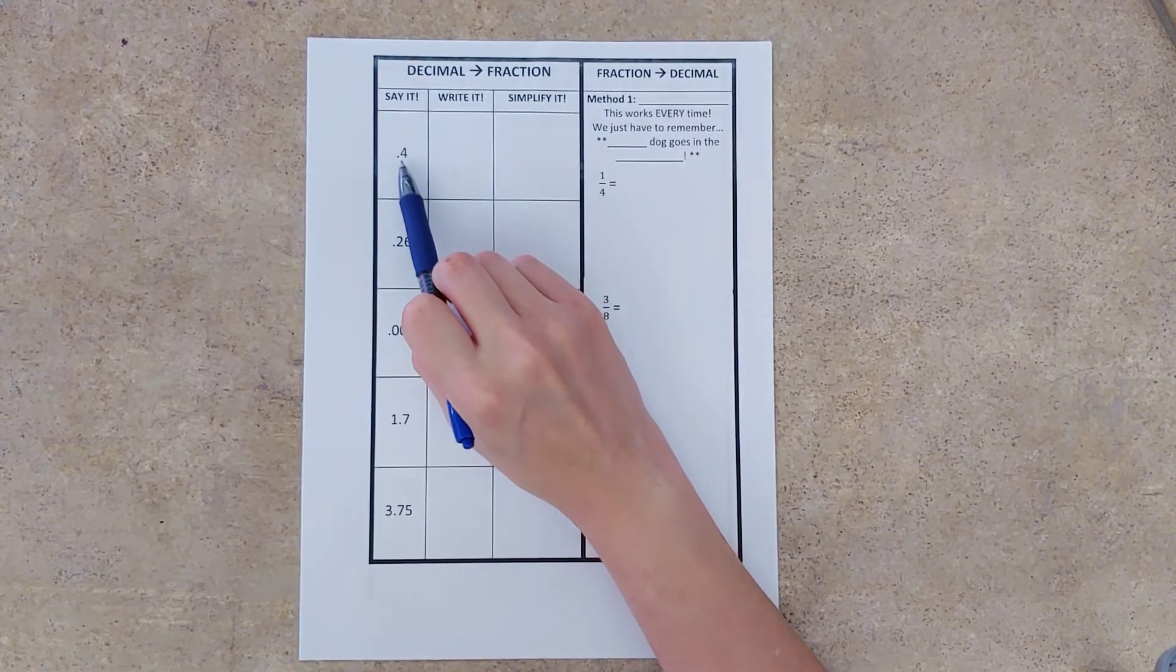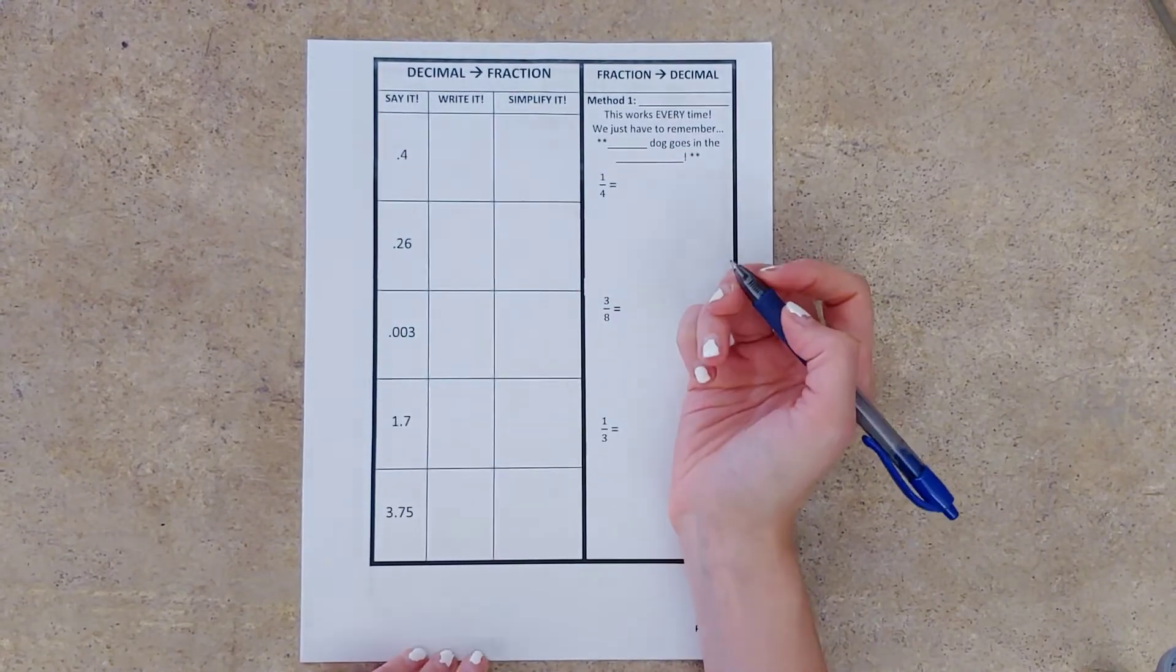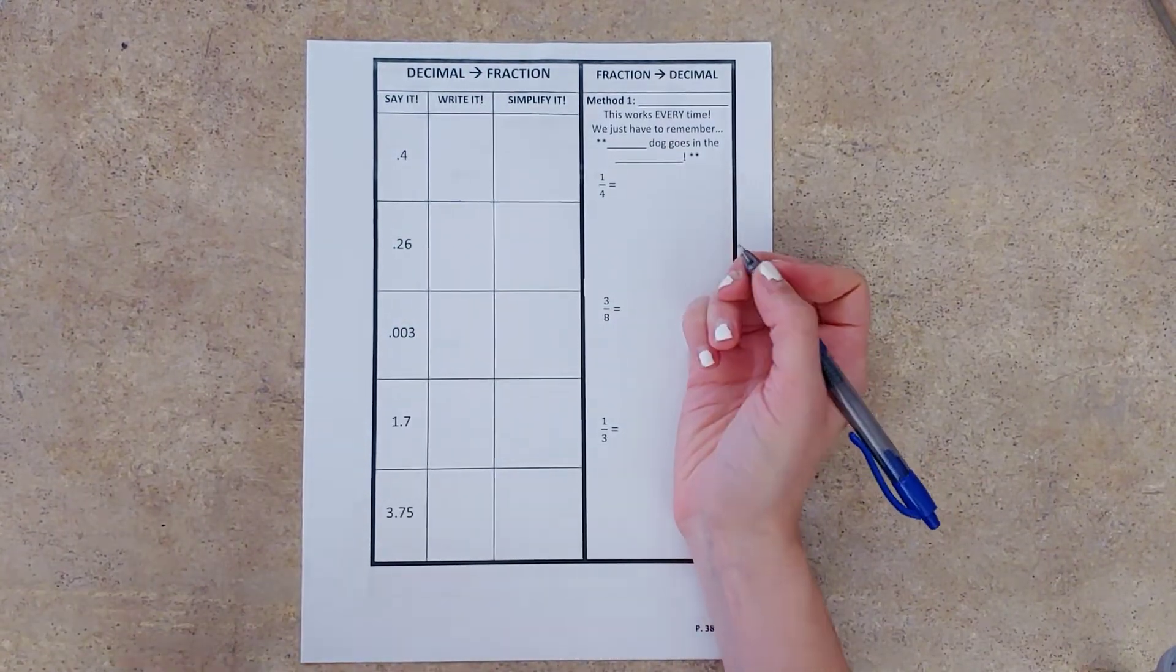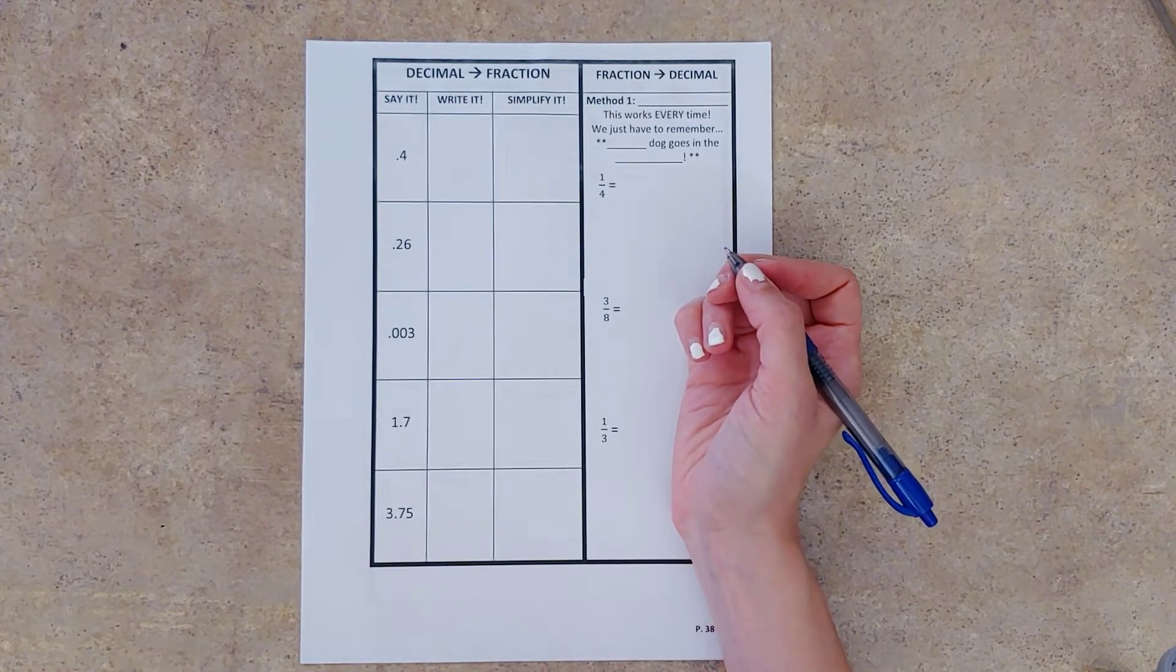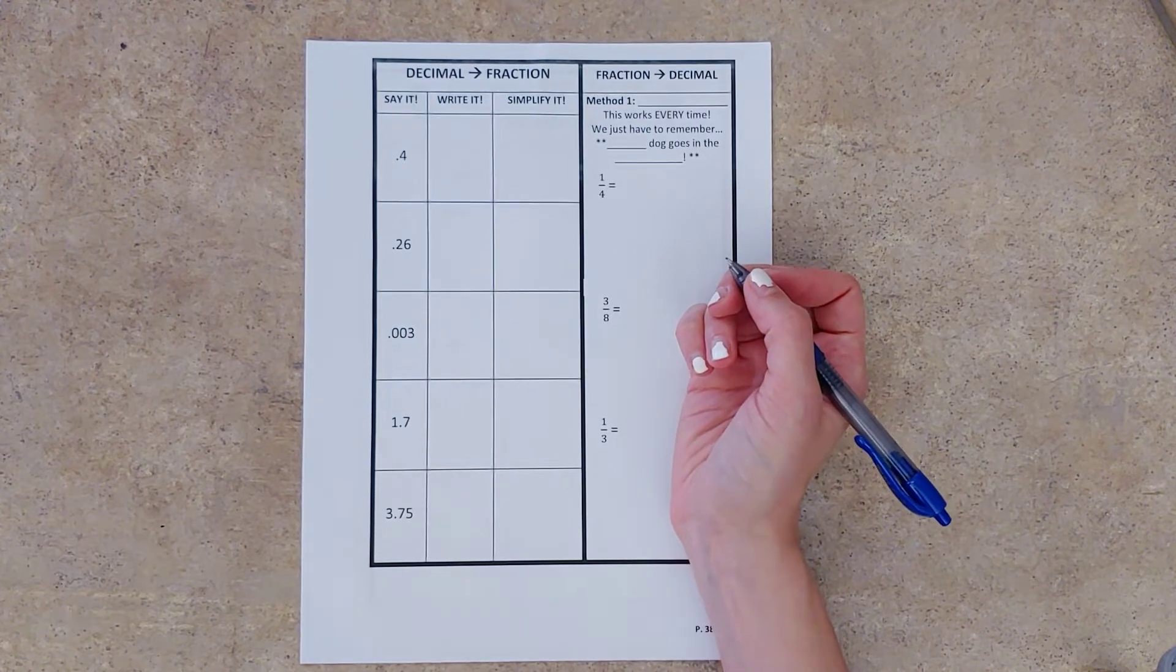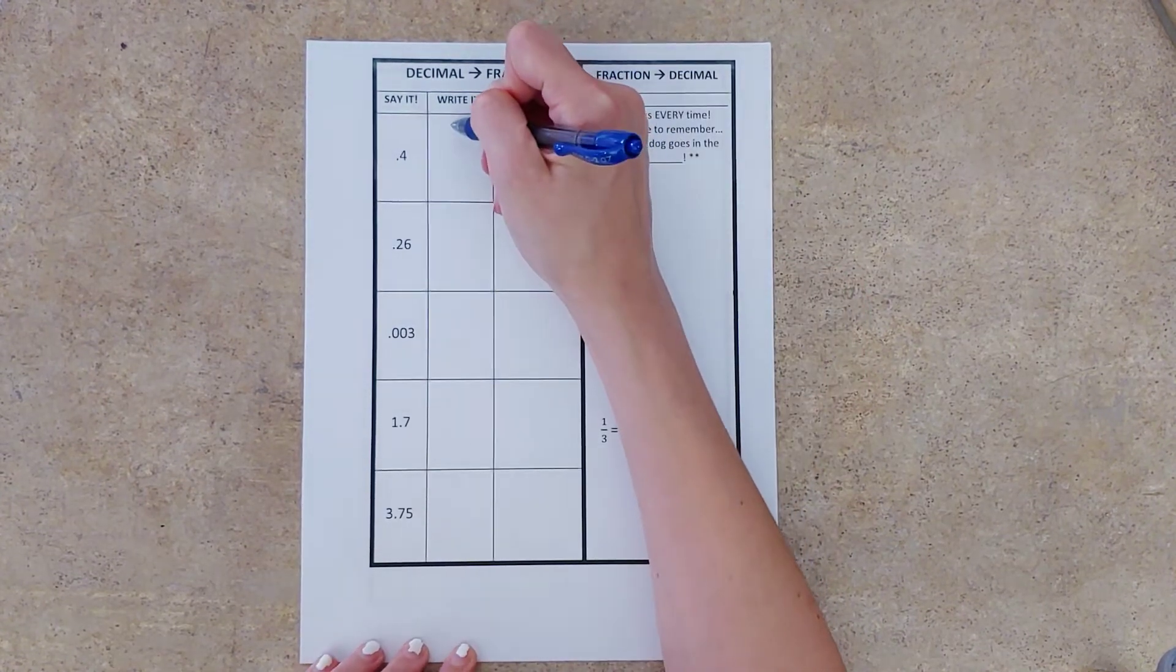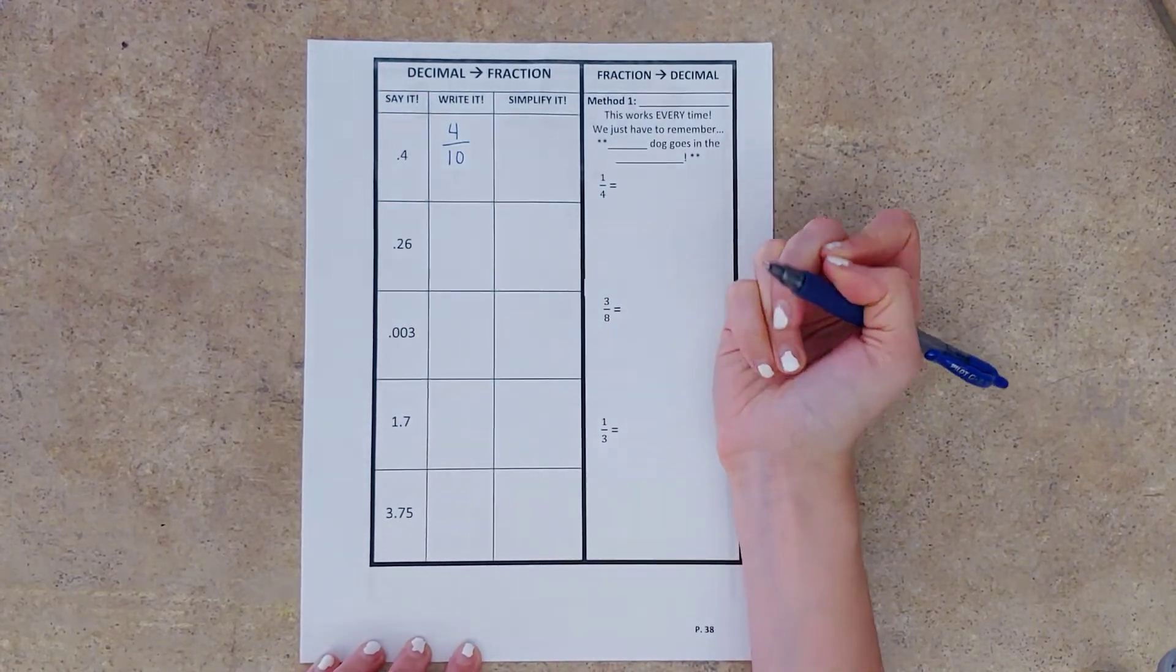So we have four tenths, the tenths place value. Four tenths. You can even close your eyes and see if you can picture the fraction, four tenths. What number is on top? What number is on bottom? Four tenths. Four out of ten. Then we see if we can simplify it, right?